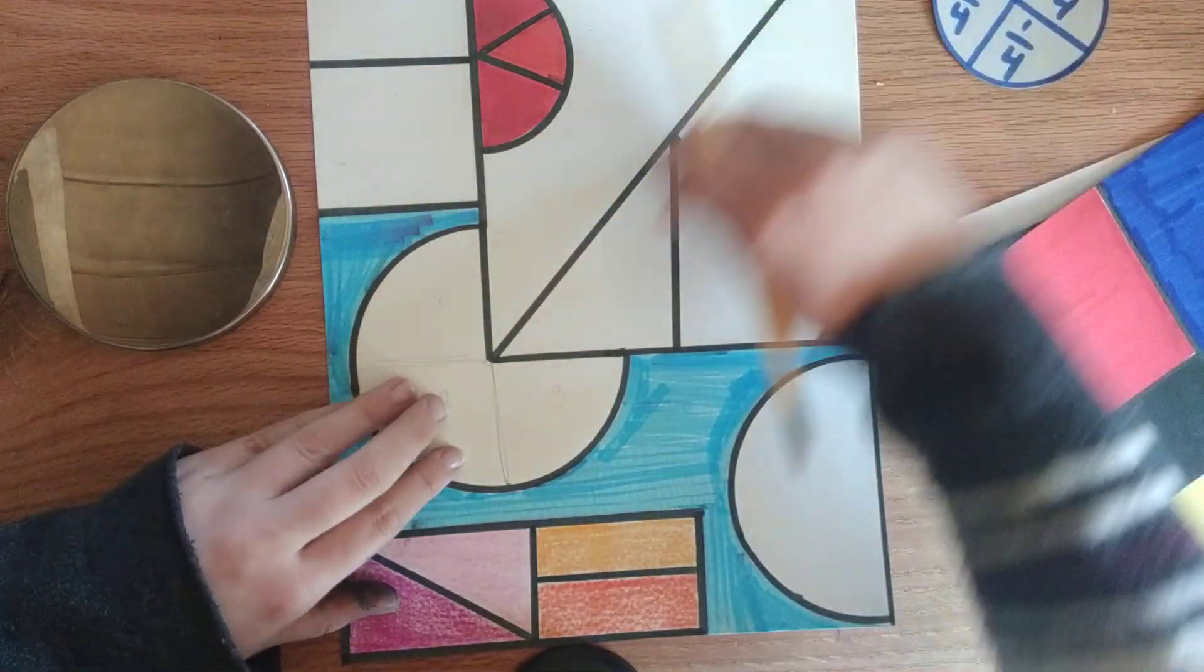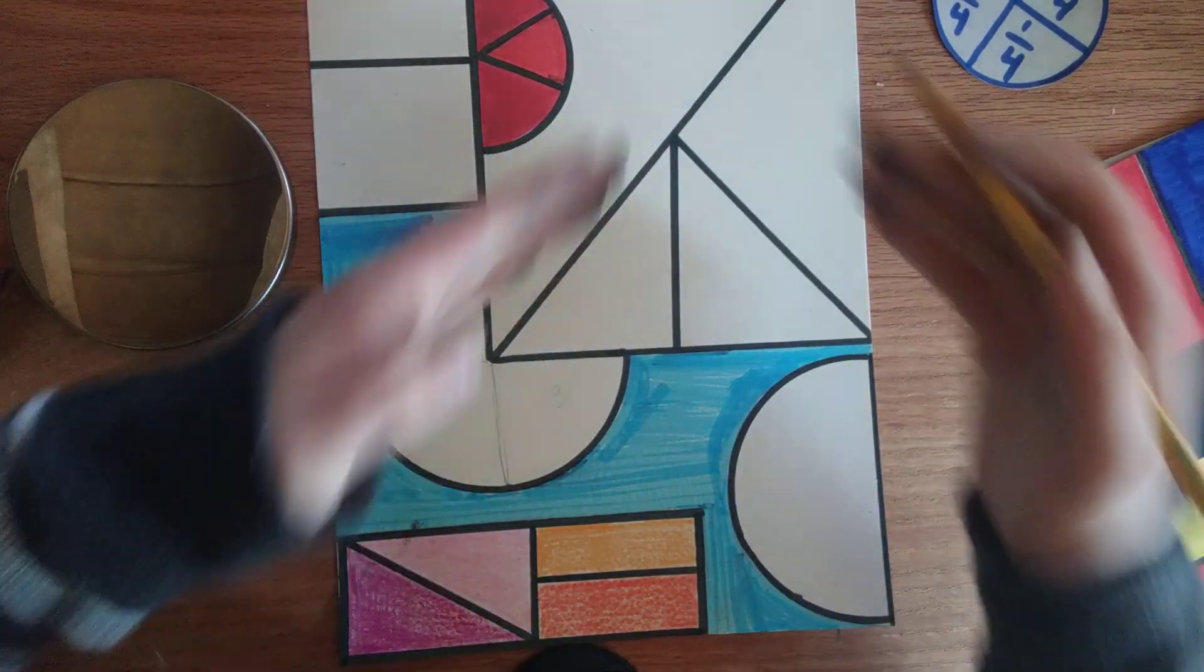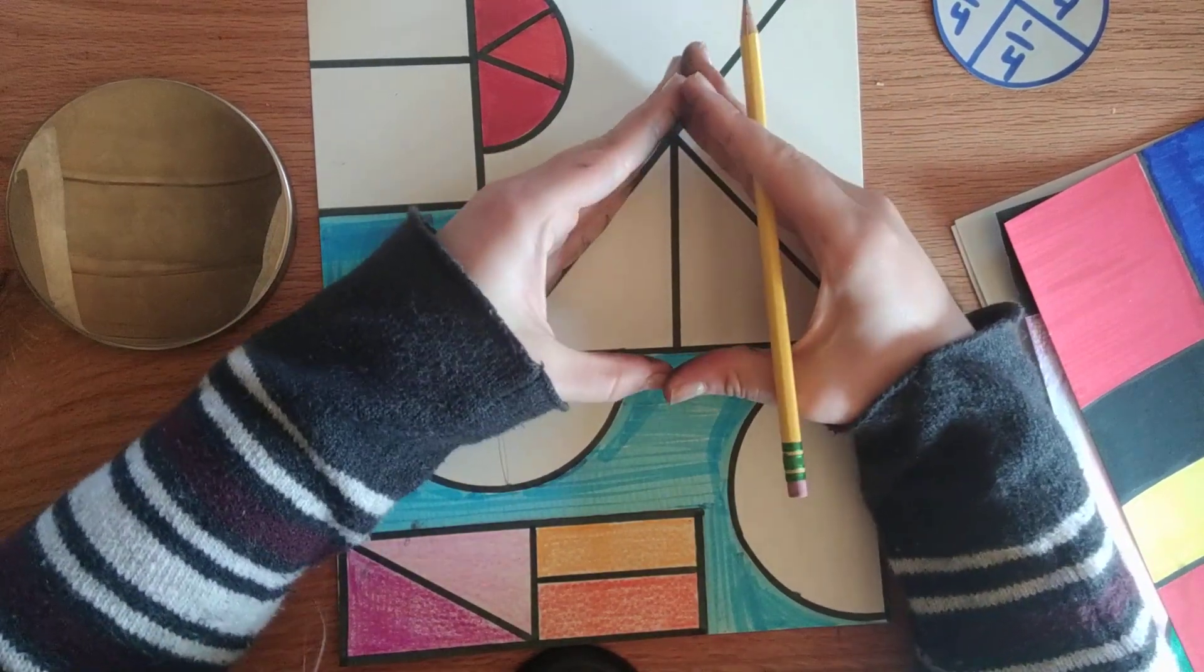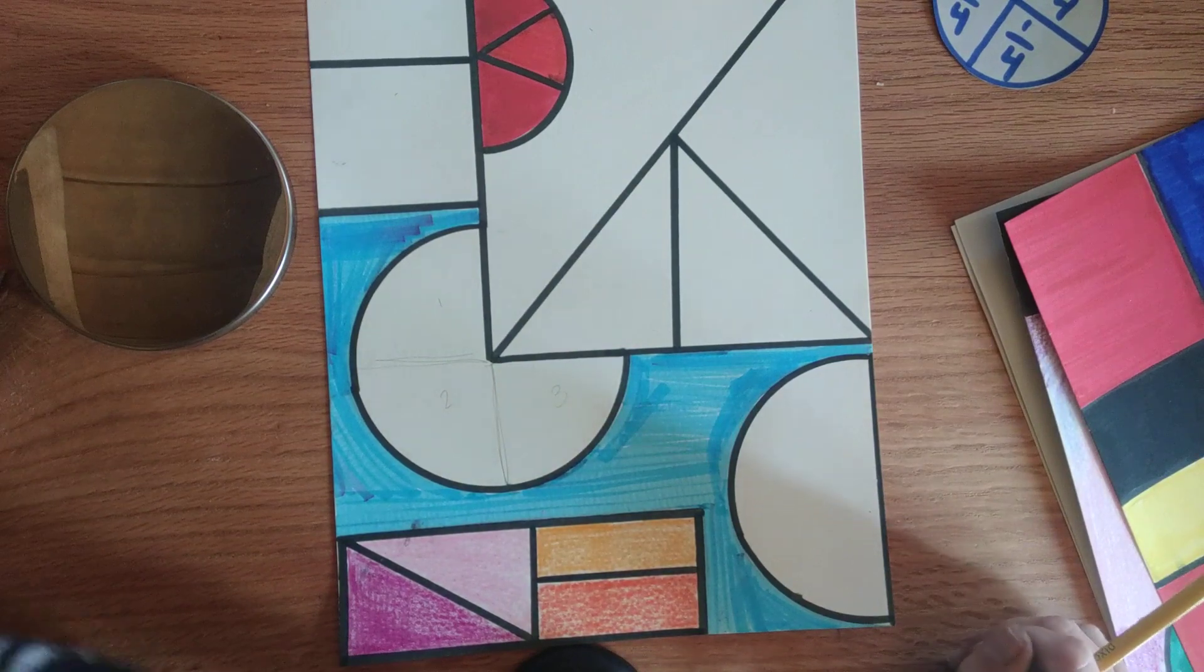You can also draw these cool diagonal lines and make really cool triangle fractions. We know this is a whole triangle. Then when you divide it up in half, it makes two smaller triangles. Pretty cool.